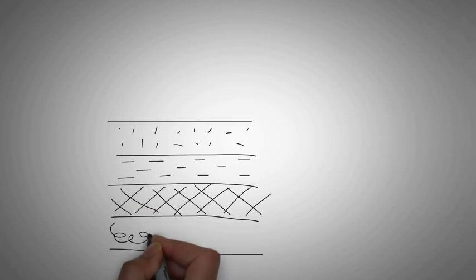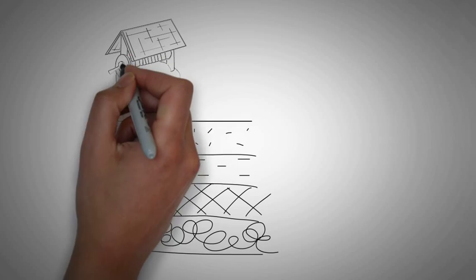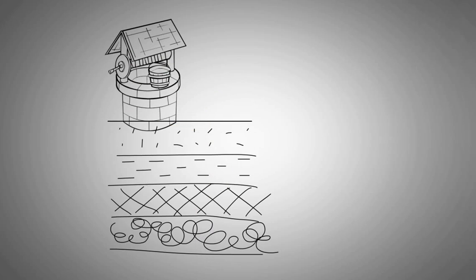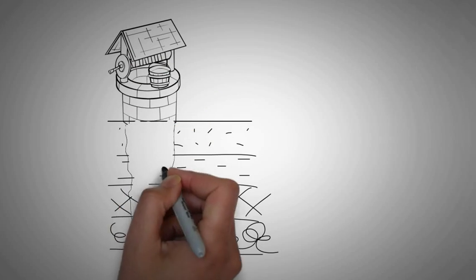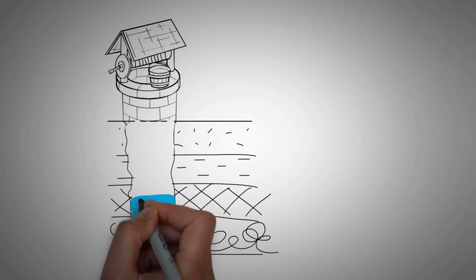One definition of the word well is a plentiful source, but in physical terms, it usually means a hole dug into the ground to obtain water, oil, or gas. But how did people know to drill for oil?